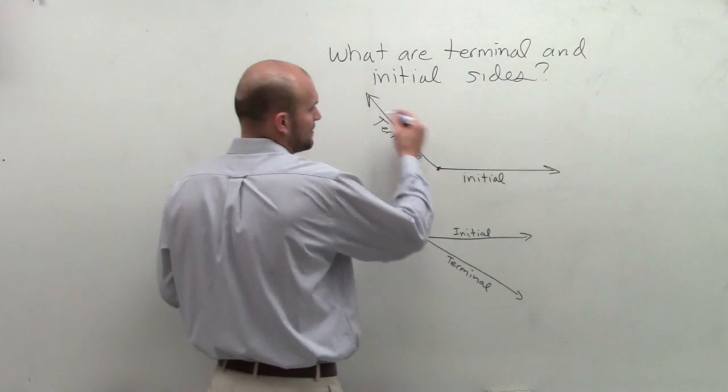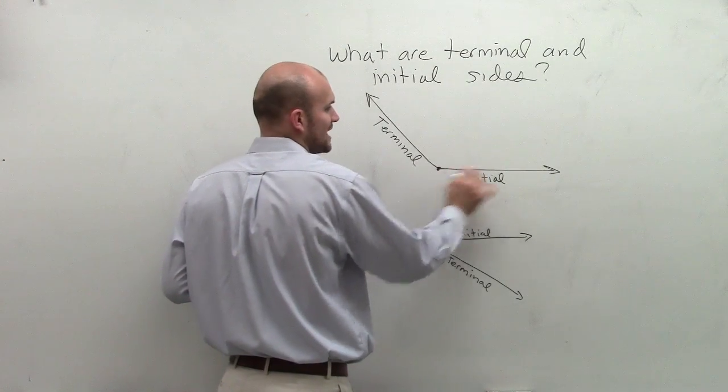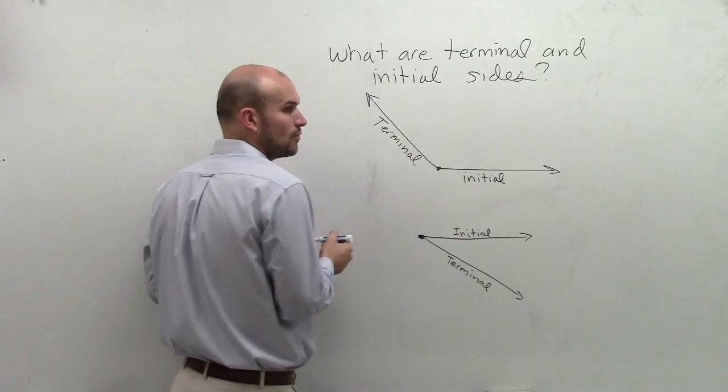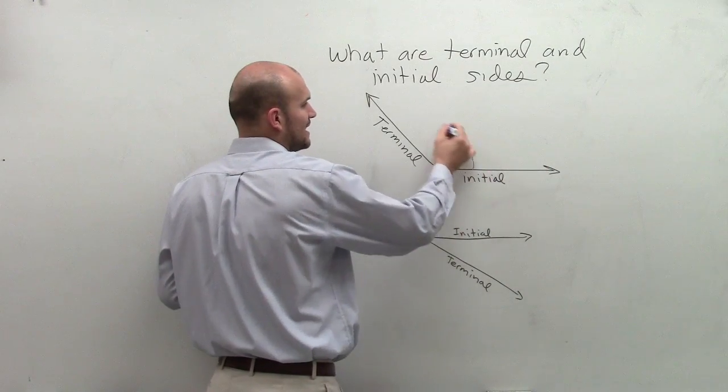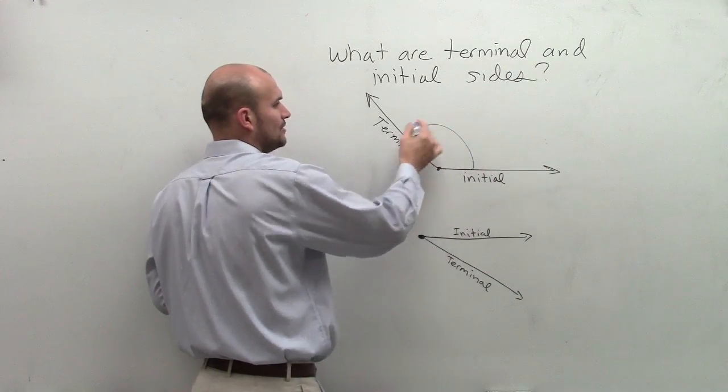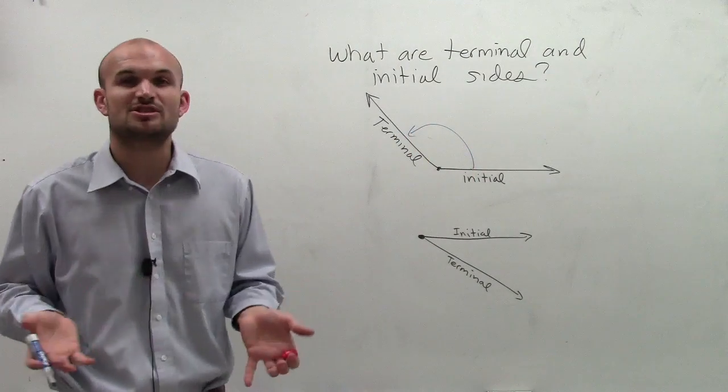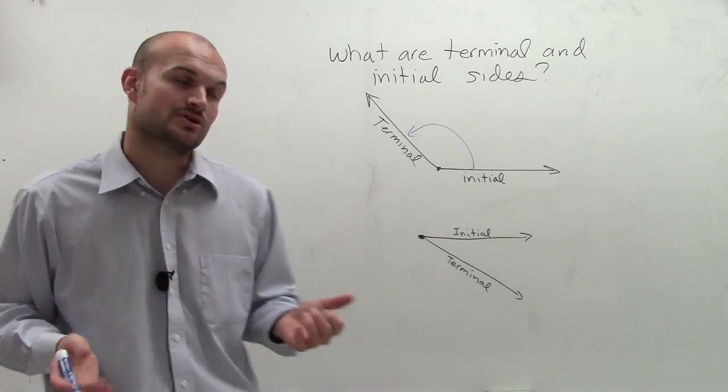So if I'm going in the positive direction of a standard form angle, the initial side is always going to be in this horizontal position. And then as I measure my angle from my initial to my terminal, which is going to be your ending ray that you're going to measure your angle to.